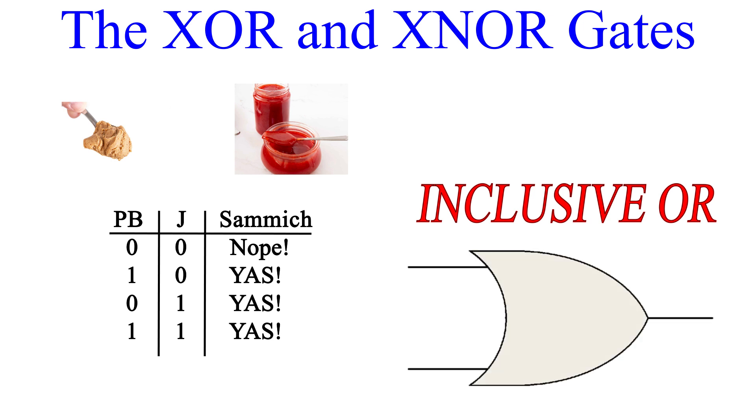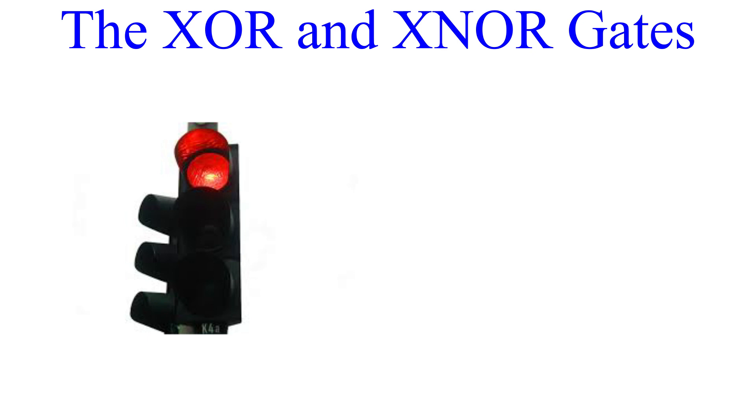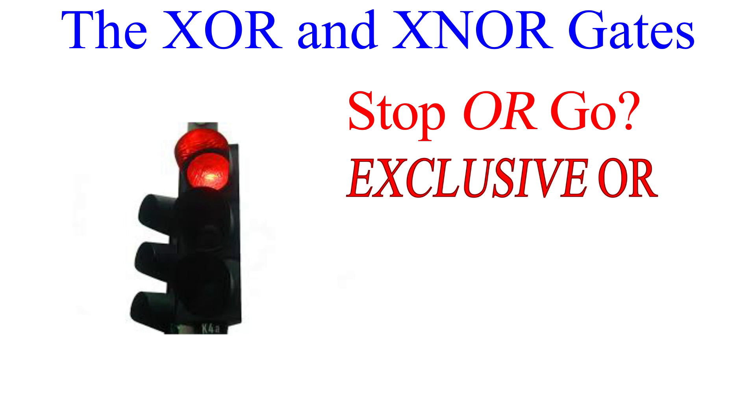Now, let's say you're driving down the road and there's a traffic signal ahead. Do you stop or do you go? You can do one or the other, but you can't do both at the same time. This is an example of exclusive OR. Each input excludes the other input. And that is how the exclusive OR gate, or XOR for short, works. Notice that the symbol for the XOR looks like the OR but with that extra curved line on the input side.